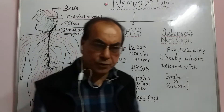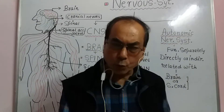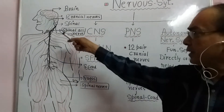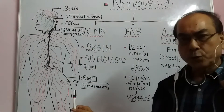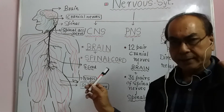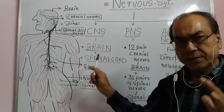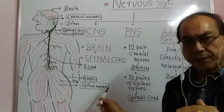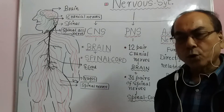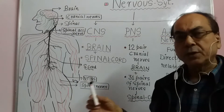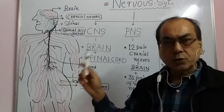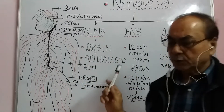As an introduction, today we will give you only an introduction. With the help of a diagram, we will show where the Central Nervous System is, where the Peripheral Nervous System is, and where the Autonomic Nervous System is. We will discuss the details one by one going forward. Today is only the introduction.